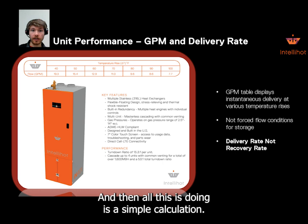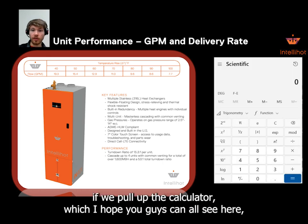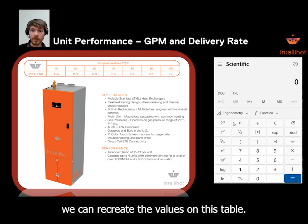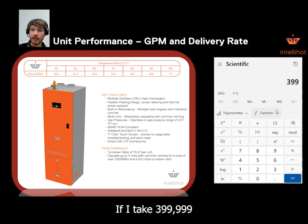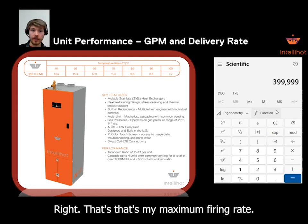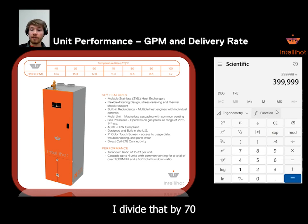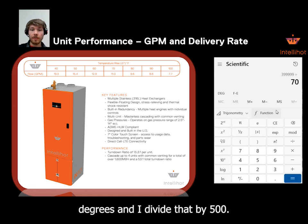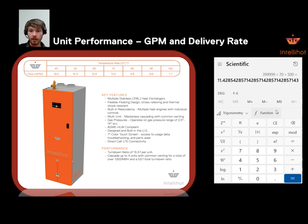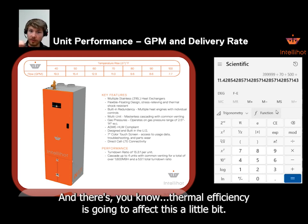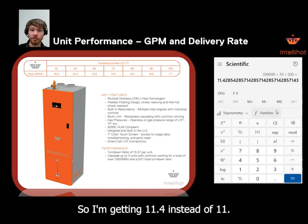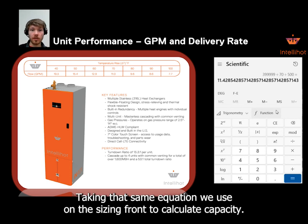All this is doing is a simple calculation, and we can actually do a calculation right now. If we pull up the calculator — which I hope you guys can all see — we can recreate the values on this table. If I take 399,999 BTU per hour, that would be an IN-401 at its maximum firing rate, divide that by 70 degrees, and then divide by 500, I'm getting 11.4. Thermal efficiency is going to affect this a little bit, so I'm getting 11.4 instead of 11. That's where this comes from — taking that same equation we use on the sizing front to calculate capacity, and just flipping it around.